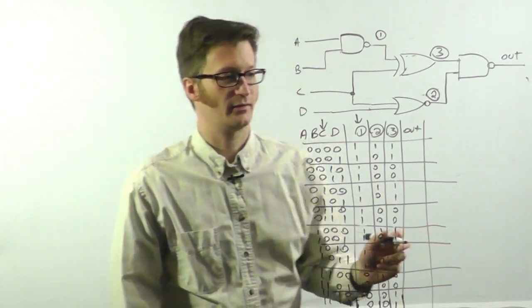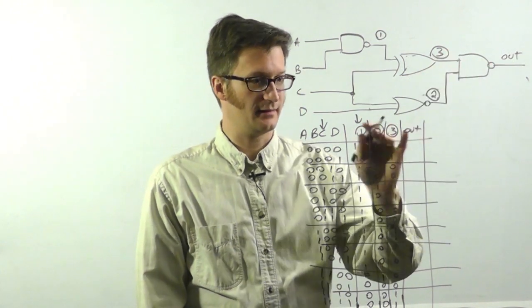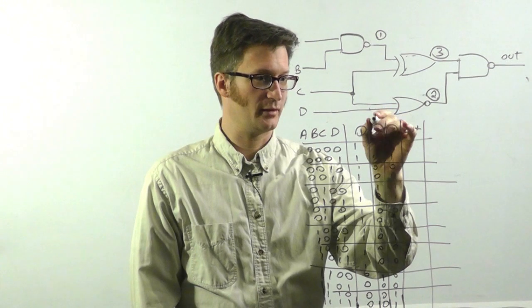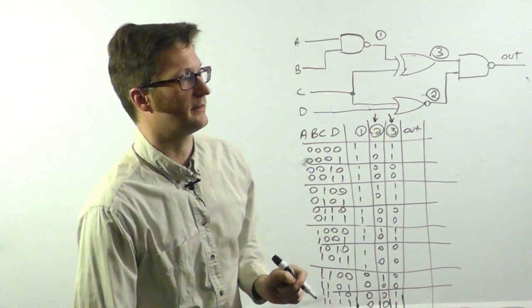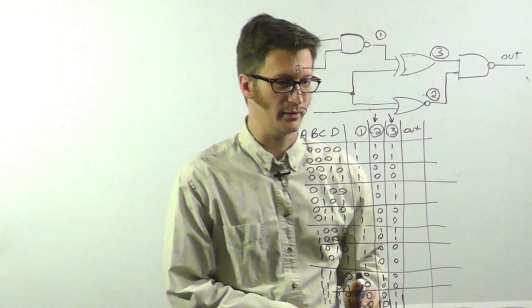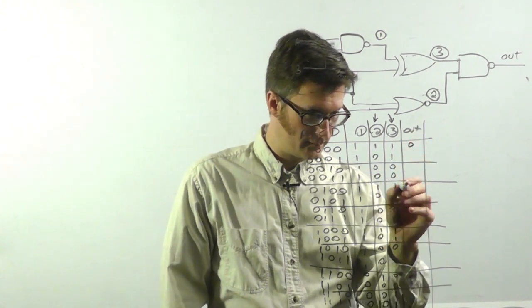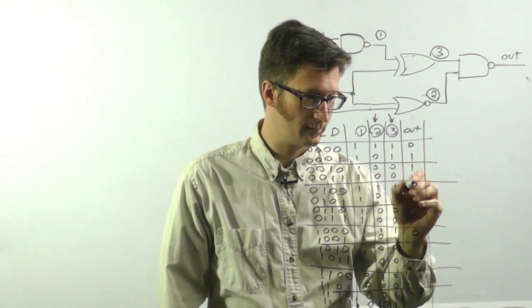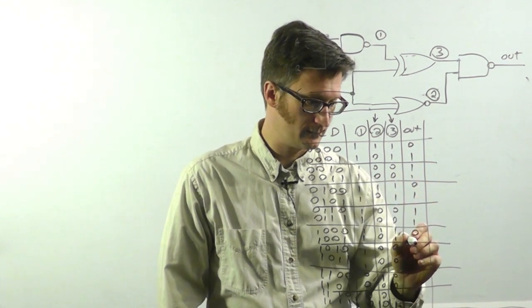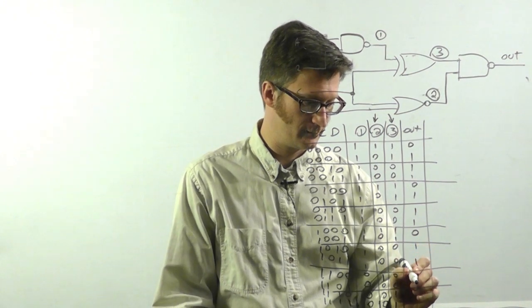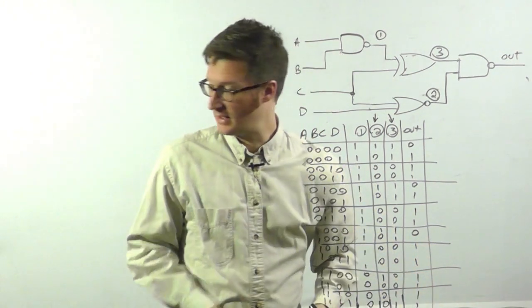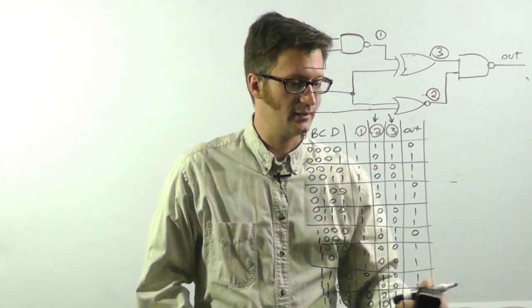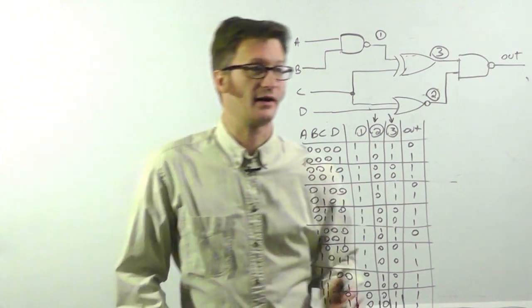And finally, I'm going to look at the output, which is working off of points two and three. And it's a NOT AND. So if both are high, the output would be low. Okay. That's great. We've got it done. But what do we do now? We're looking to simplify this circuit.